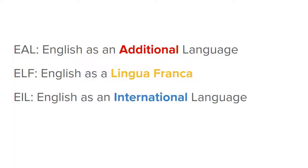Related to this is EIL, English as an International Language. The idea behind EIL is that it recognizes English as a global language, and tries to focus on a more universally understood English, rather than focusing on English that's very specific to a particular country or region. EIL tries to be more flexible with pronunciation and vocabulary, but still focuses on being understood in a wide range of contexts.